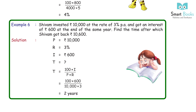Example 6: Shivam invested Rs 10,000 at the rate of 3% PA and got an interest of Rs 600 at the end of some years. Find the time after which Shivam got back Rs 10,600. Solution: P = Rs 10,000, R = 3%, I = Rs 600. T = 100 × I ÷ (P × R) = 100 × 600 ÷ (10,000 × 3) = 2 years.